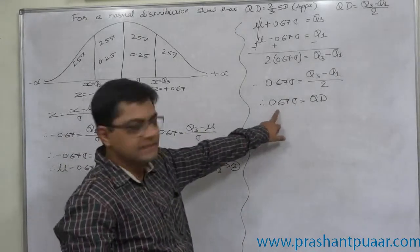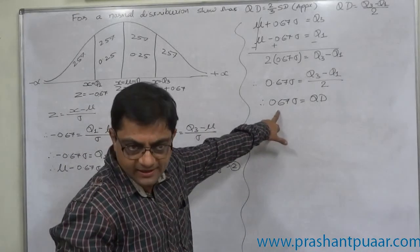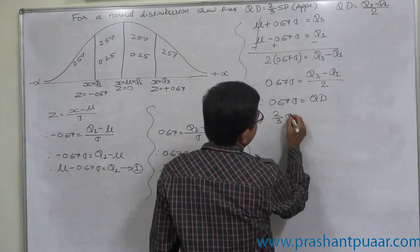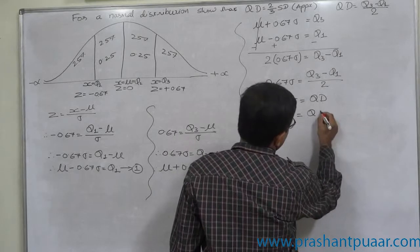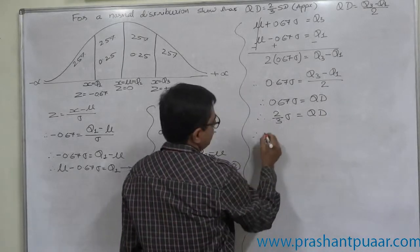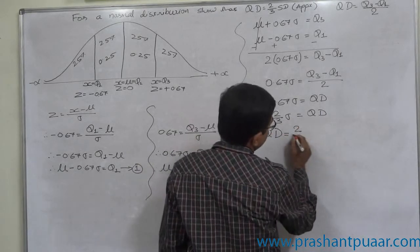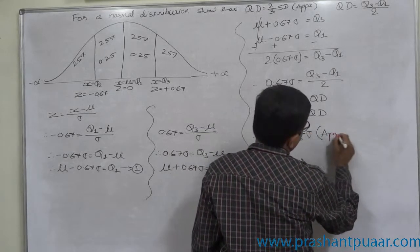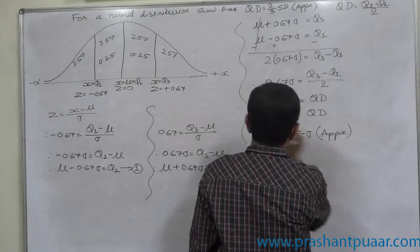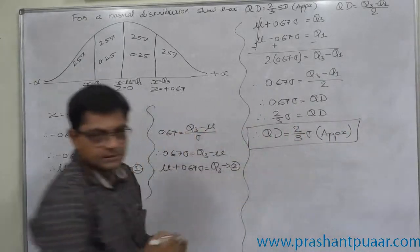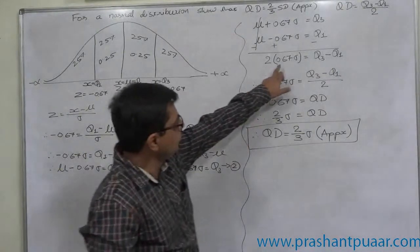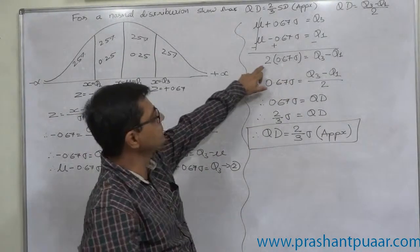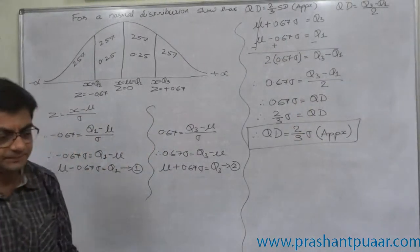Therefore 0.67 sigma equals quartile deviation. Since 0.67 is approximately two-thirds, we get two-thirds sigma equals quartile deviation. So quartile deviation equals two-thirds standard deviation approximately. One important tip: don't add 0.67 and 0.67 separately — just write it as two times 0.67.